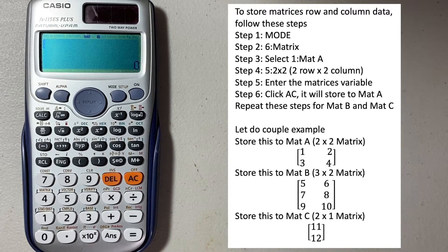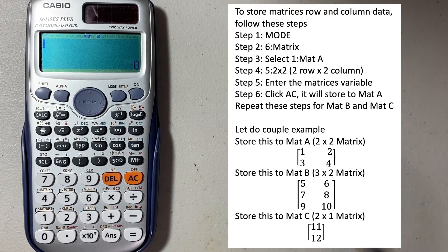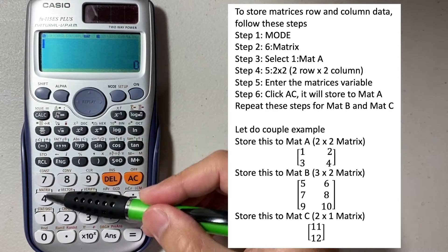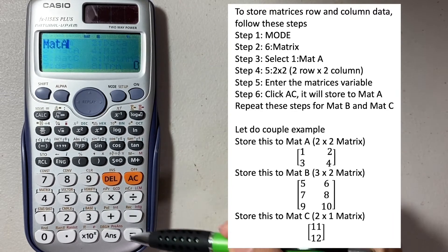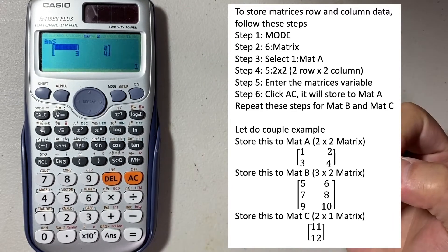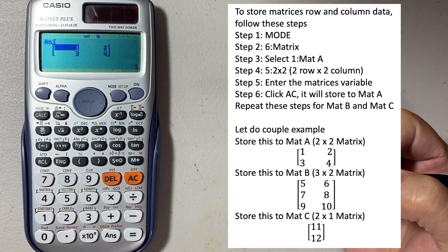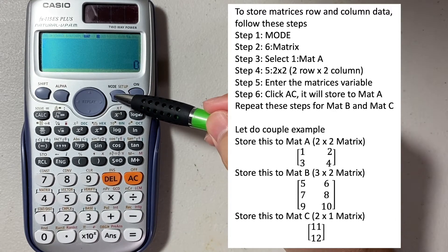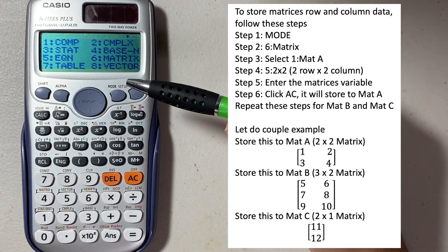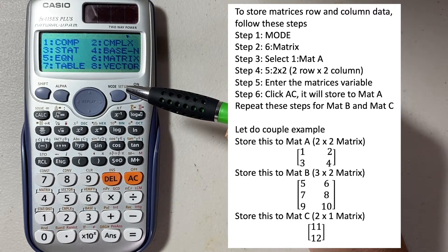Let's do a couple of examples. Let's say you have a 2x2 matrix: 1, 2, 3, 4. We've already stored that matrix in matrix A. And then we're going to store a matrix B — let's say you have 3 rows and 2 columns.